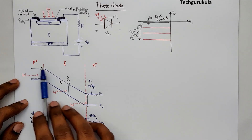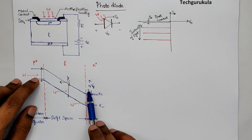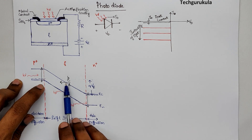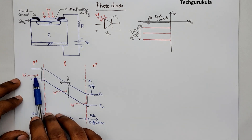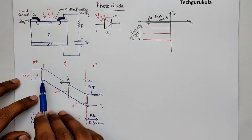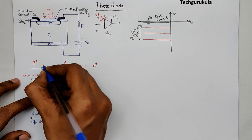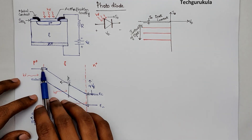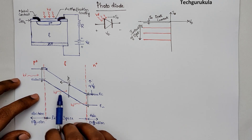The energy band diagram of a PIN diode under reverse bias shows the Fermi energy levels split by Q times V_R. There is an electric field in the depletion regions and in the intrinsic region, directed in the negative x direction because the slope of the energy band diagram is negative. When light is incident and photons are absorbed in the P side, electron-hole pairs are generated. The electron can diffuse into the depletion region where the electric field pulls it toward the N side, while holes are pushed out by the electric field.